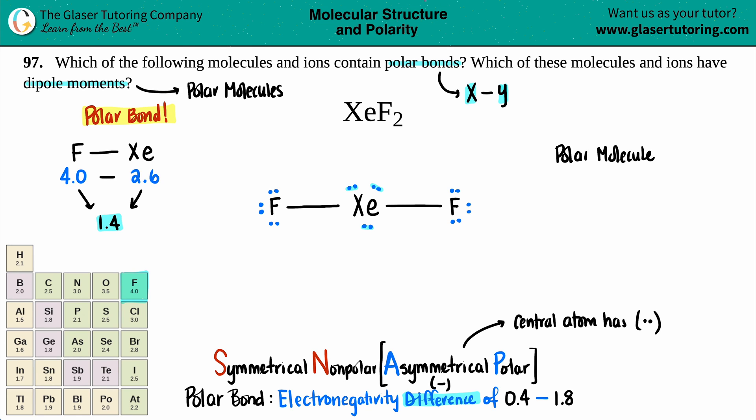So this is a polar molecule. And because it's polar, we know that this has a dipole moment. There is an unequal sharing of electrons in the molecule. Dipole moment.